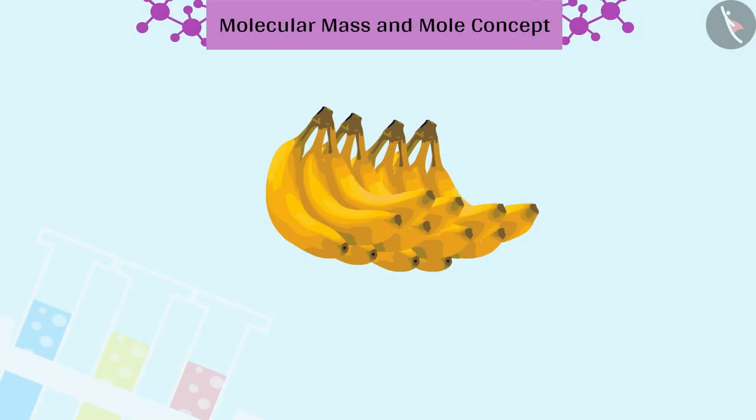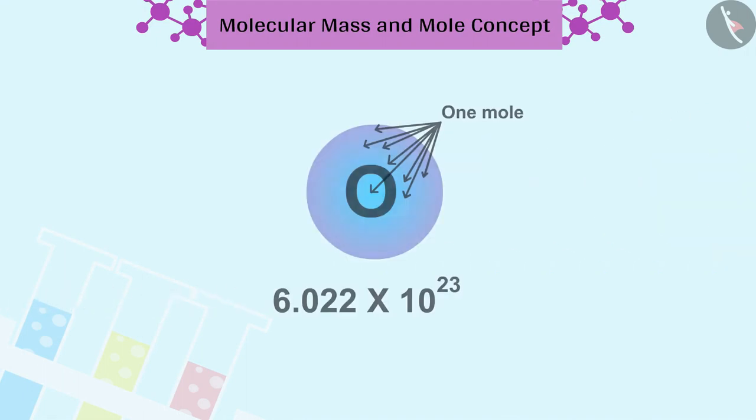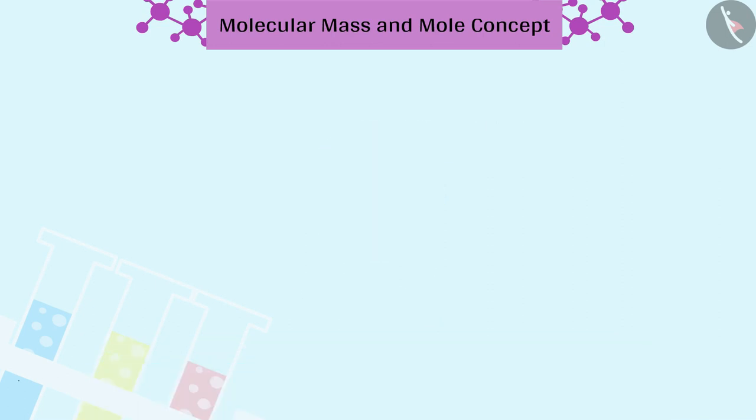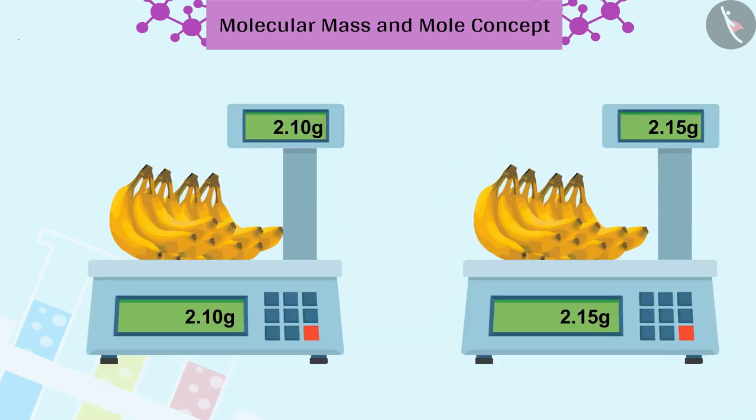For example, a dozen of an object is equal to 12 objects. In the same way, one mole of a substance is equal to 6.022 into 10 raised to 23.